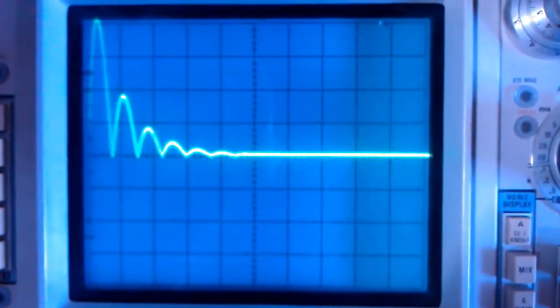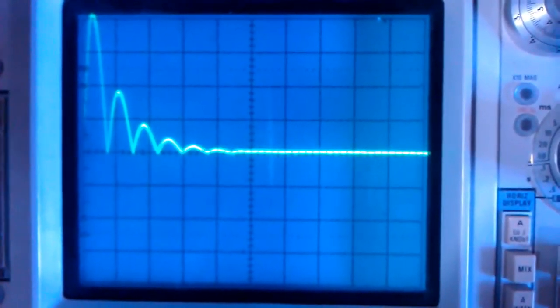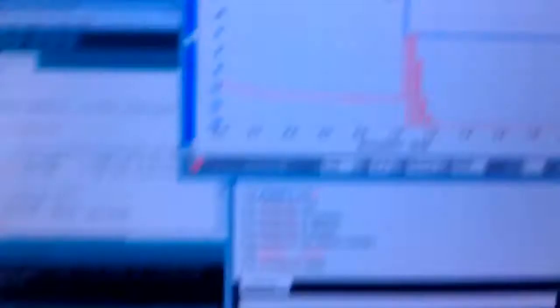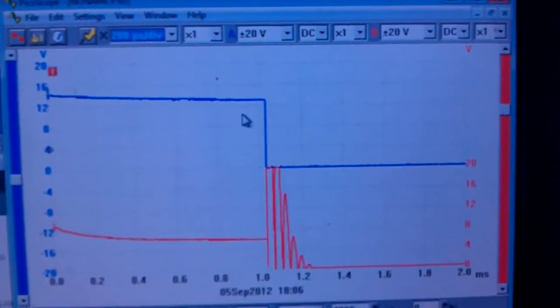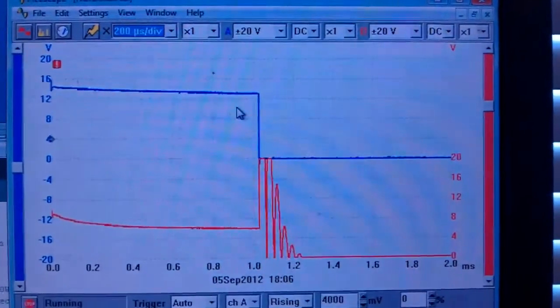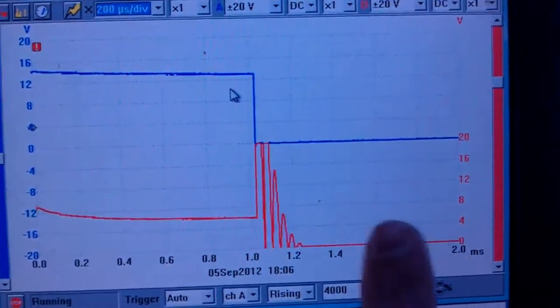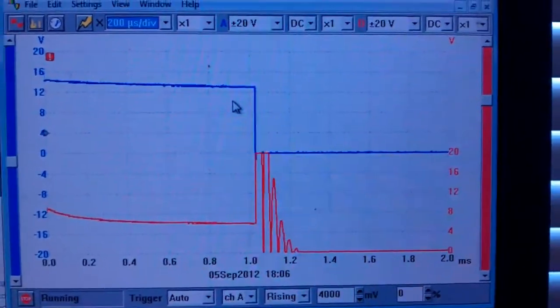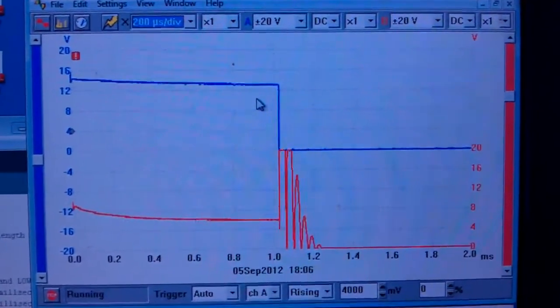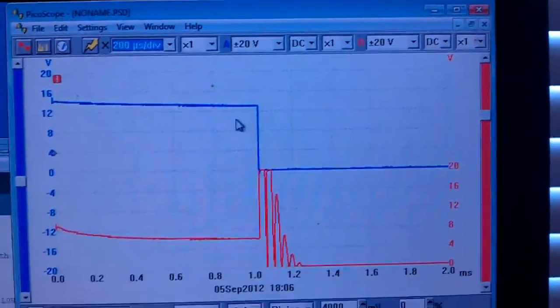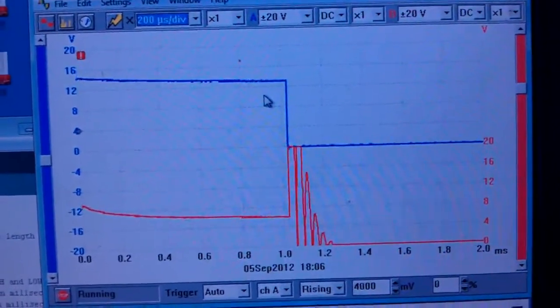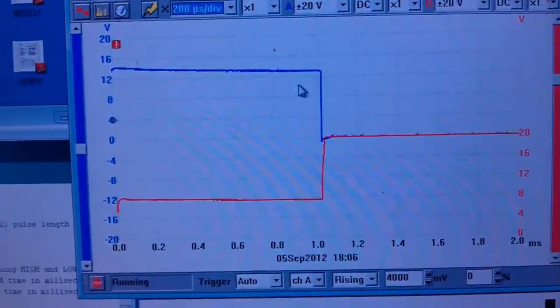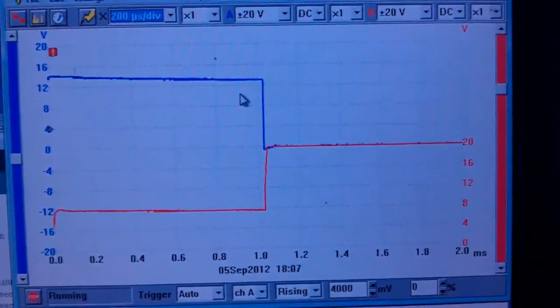But that in itself is not that interesting. What is interesting is what happens when I make a very small alteration to the circuit, which I'll do now. And I'll ask you to observe what's happening over on this side here on the waveform showing the collapsing magnetic field of the coil. I'll make that adjustment now. Well, this is where it starts to get interesting.